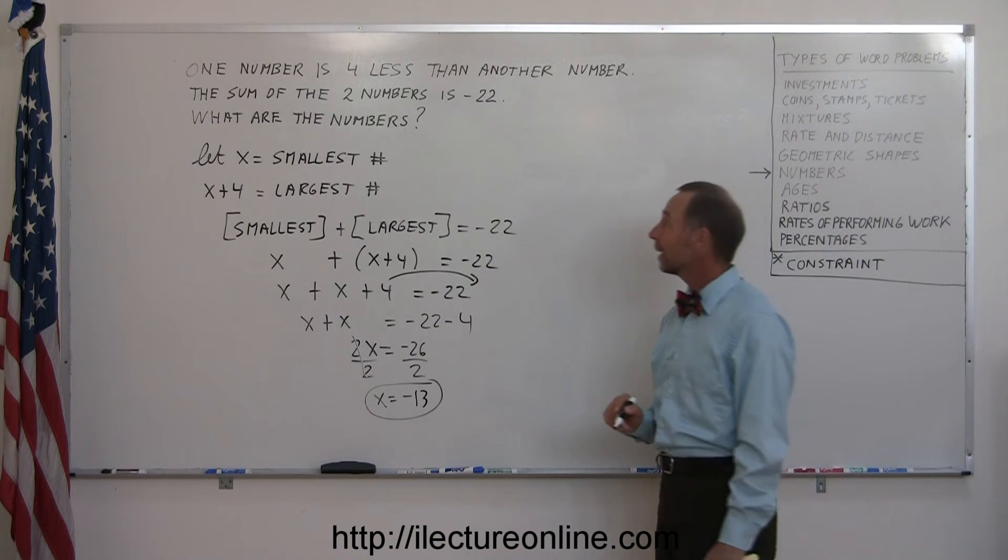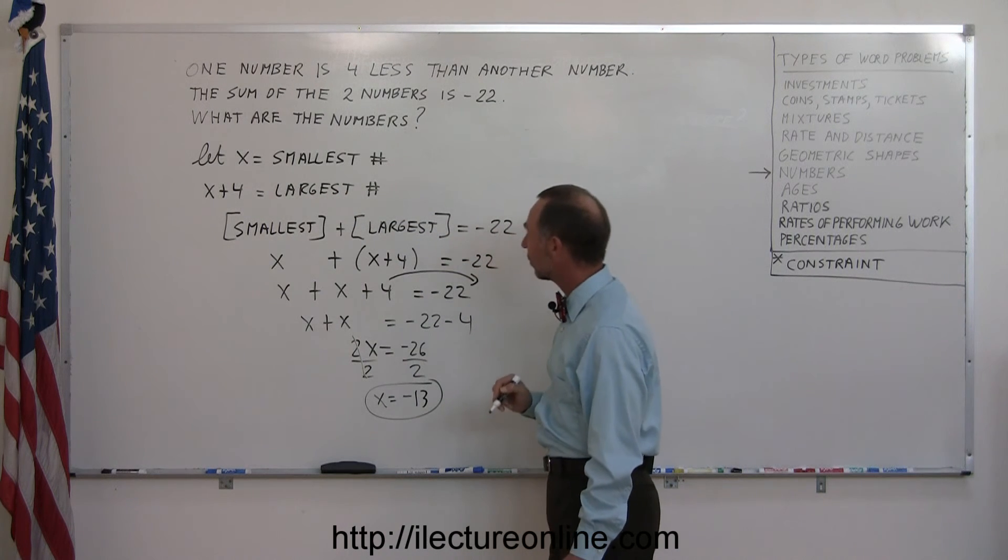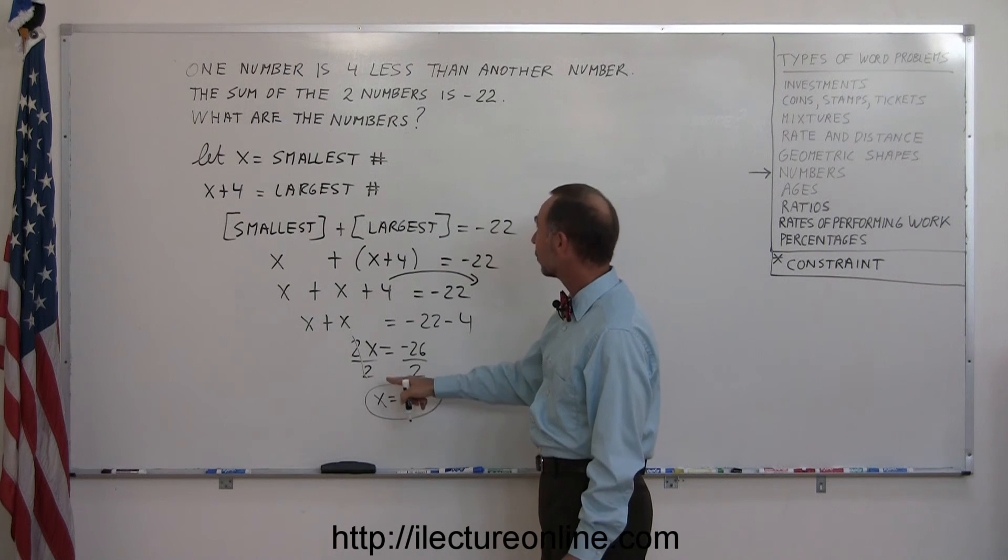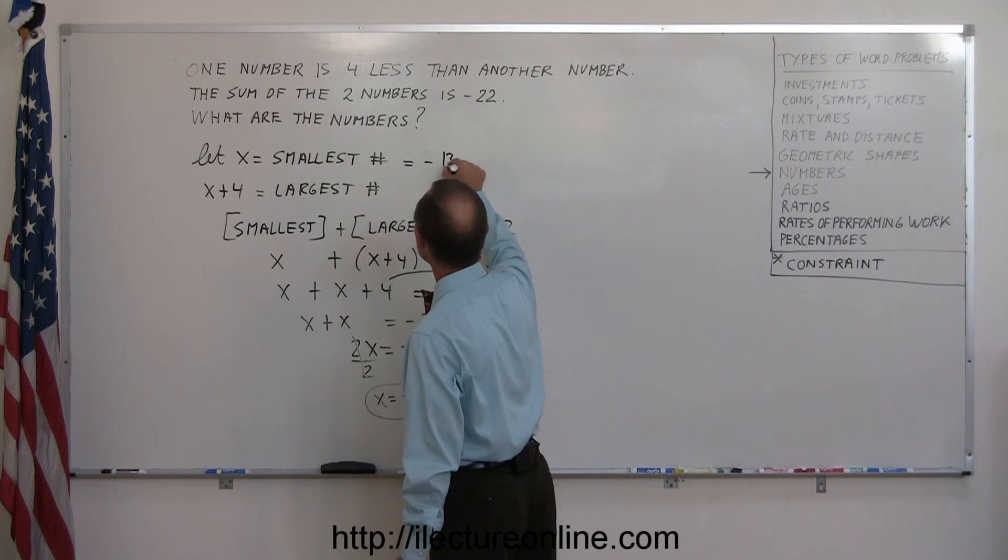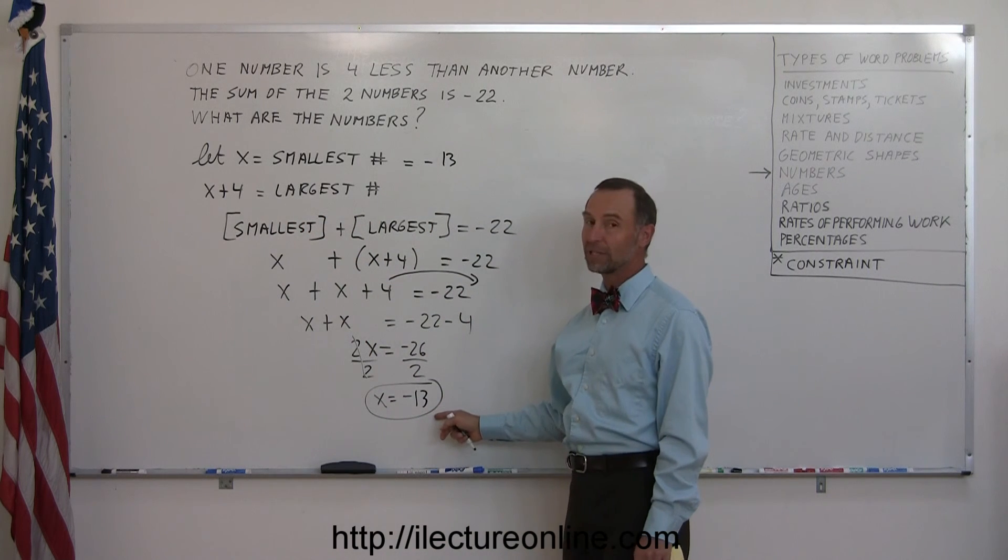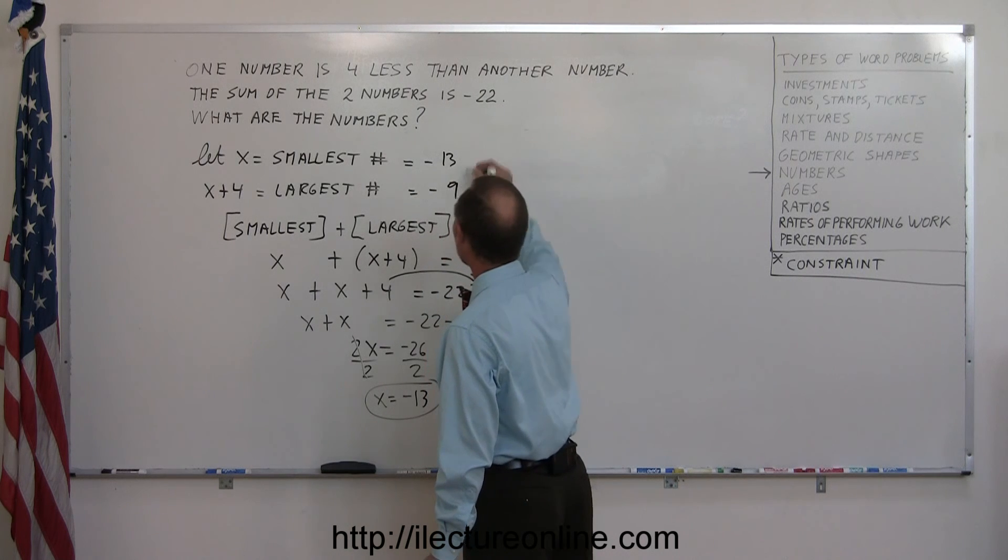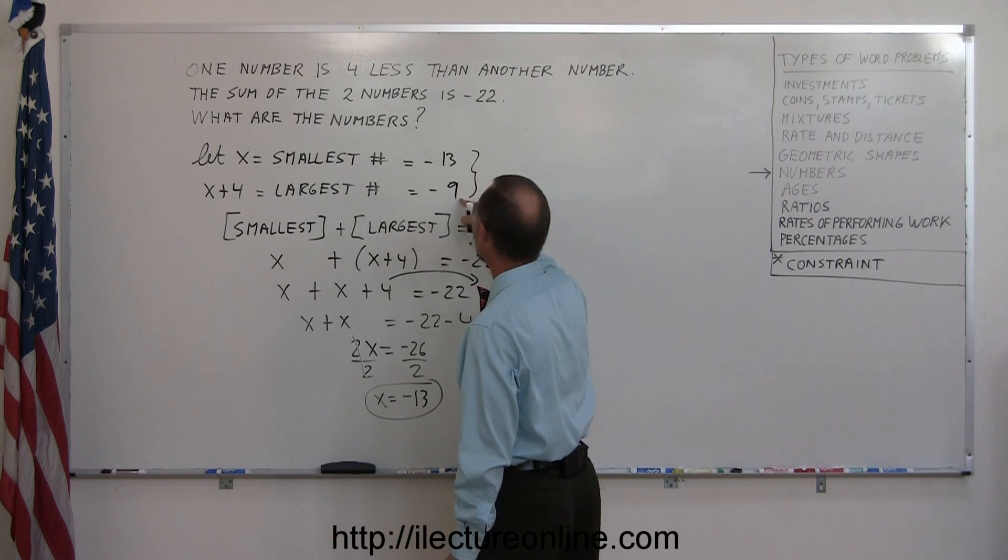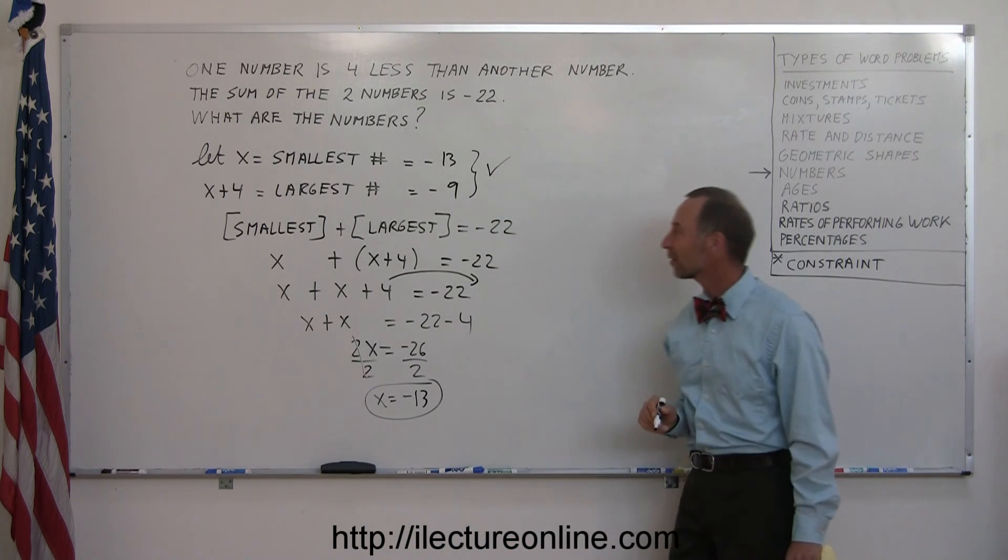Now let's see what we defined the numbers as. Since x equals the smallest number and x equals minus 13, the smallest number equals minus 13. And since the largest number is four more, when we add four to minus 13, we get minus nine. If we combine the two, minus 13 plus minus nine indeed gives minus 22. So we've got the right answers.